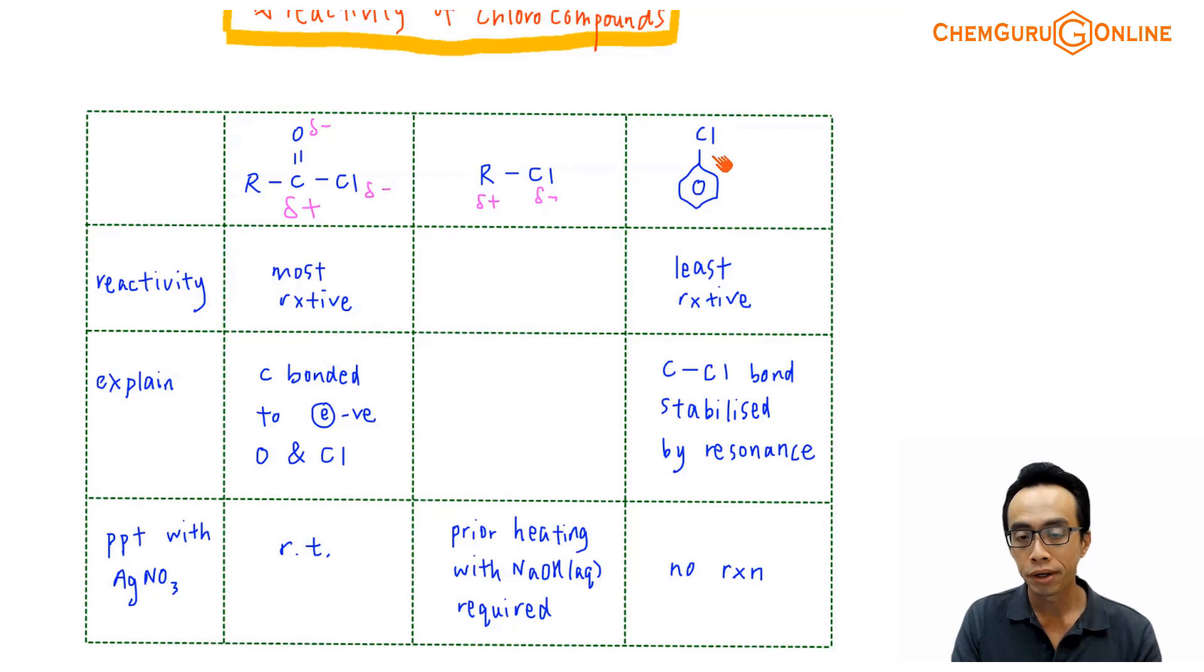If I consider chlorobenzene, the reason why this C-Cl bond is very stable is because it is stabilized by resonance. Usually what we will do is we will mention that chlorine has a lone pair, so you can use the lone pair to interact with the delocalized pi system of benzene. So this C-Cl bond will be stabilized by resonance. Some of us will say that it has partial double bond character. You can use either one of them.